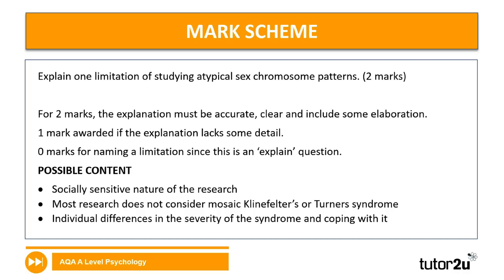The next two-marker: explain one limitation of studying atypical sex chromosome patterns. For two marks, identify a limitation and explain or elaborate it. Possible content includes the socially sensitive nature of the research — most research doesn't consider the complexities of Klinefelter or Turner syndrome, individual differences in severity may be ignored, and coping with the syndrome links back into socially sensitive research.